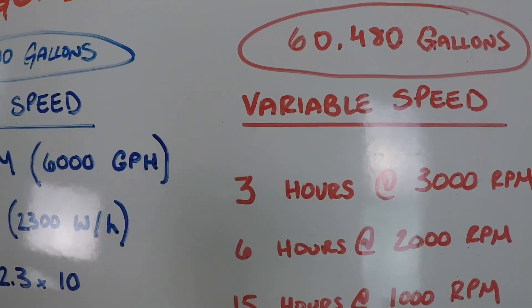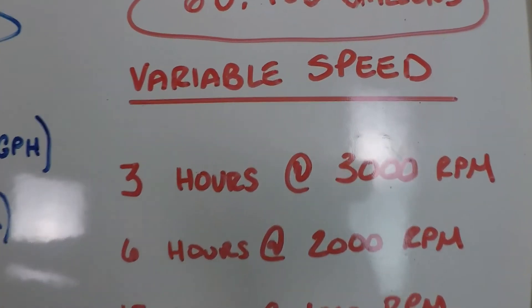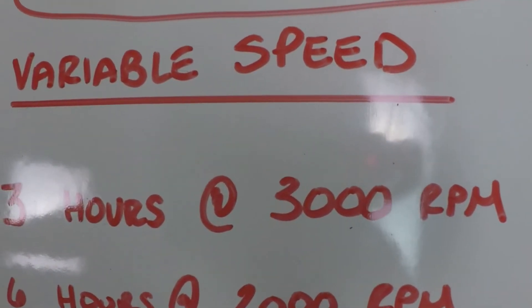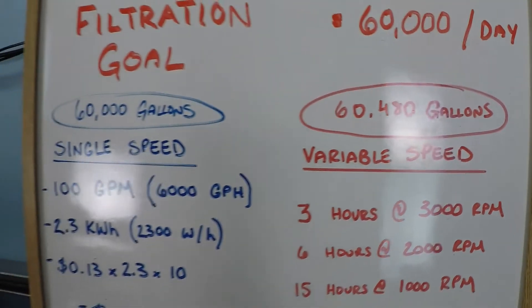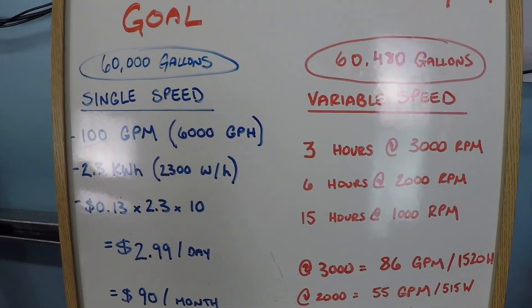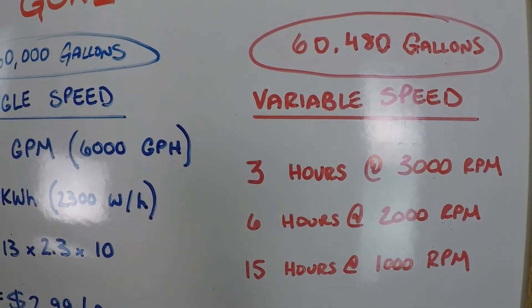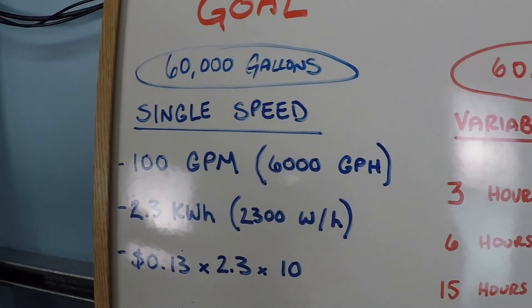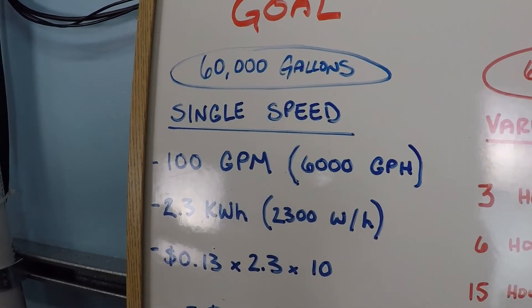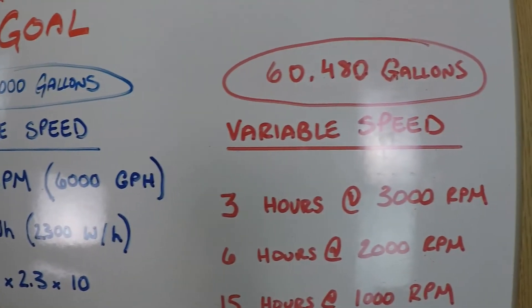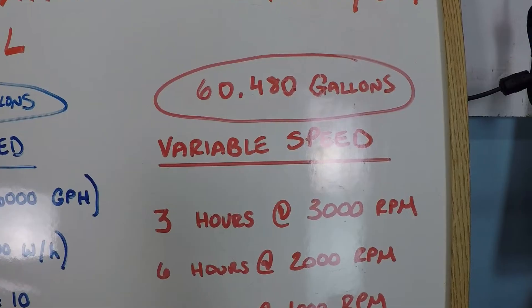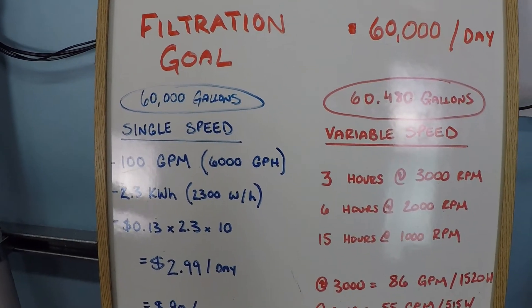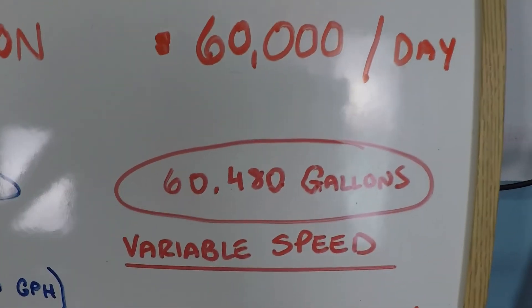Every hour that your variable speed pump is off is another missed opportunity for you to save a lot of money. And I'm going to show you how here. So with this schedule, the first thing you'll notice is that our top speed isn't 3,450 RPM. It's 3,000. Why would that be? Well, the reason is you can get a lot of flow at 3,000 RPM, almost as much flow as you do at 3,450. But even a small reduction in speed results in a huge drop in power consumption. Let's take a look.